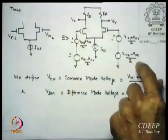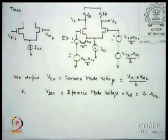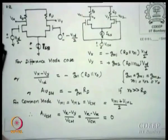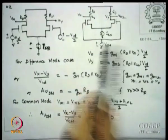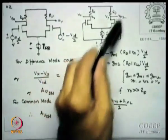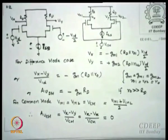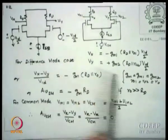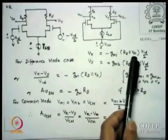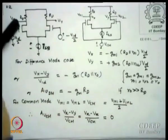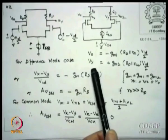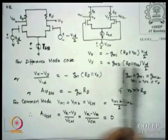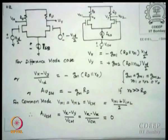The difference mode circuit has plus VID/2 on one side and minus VID/2 on the other, with the same VCM on both — which makes the job much easier. For the common mode equivalent circuit, the same VCM is common to both inputs. So we have two circuits to solve: the difference mode circuit and the common mode circuit.